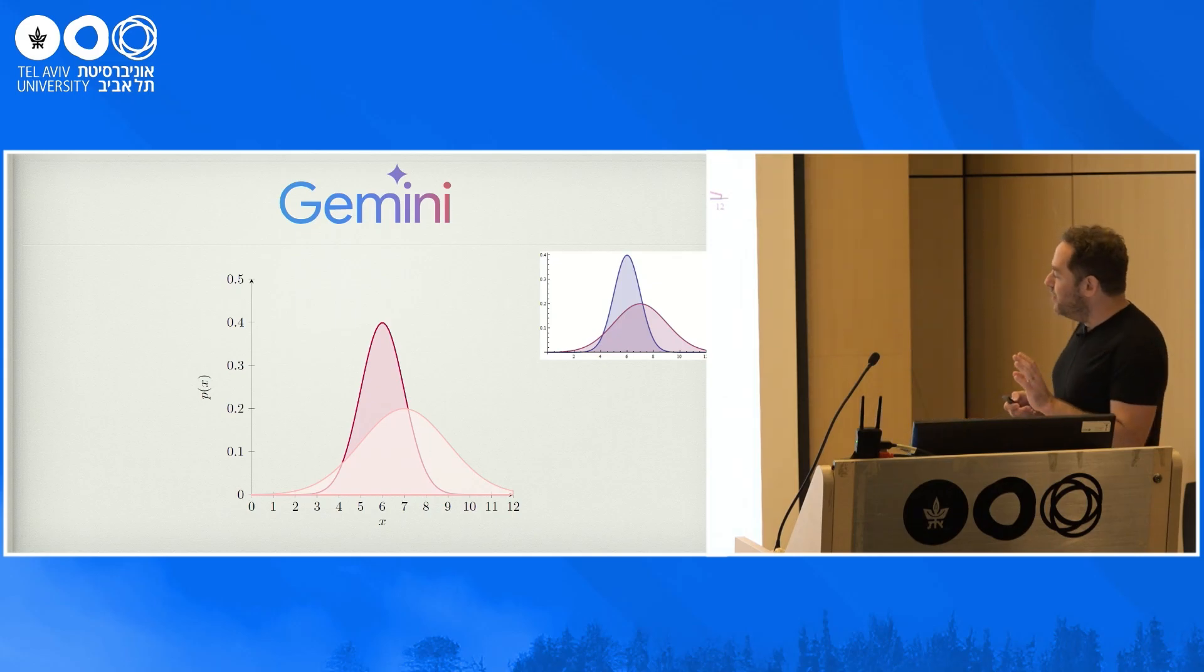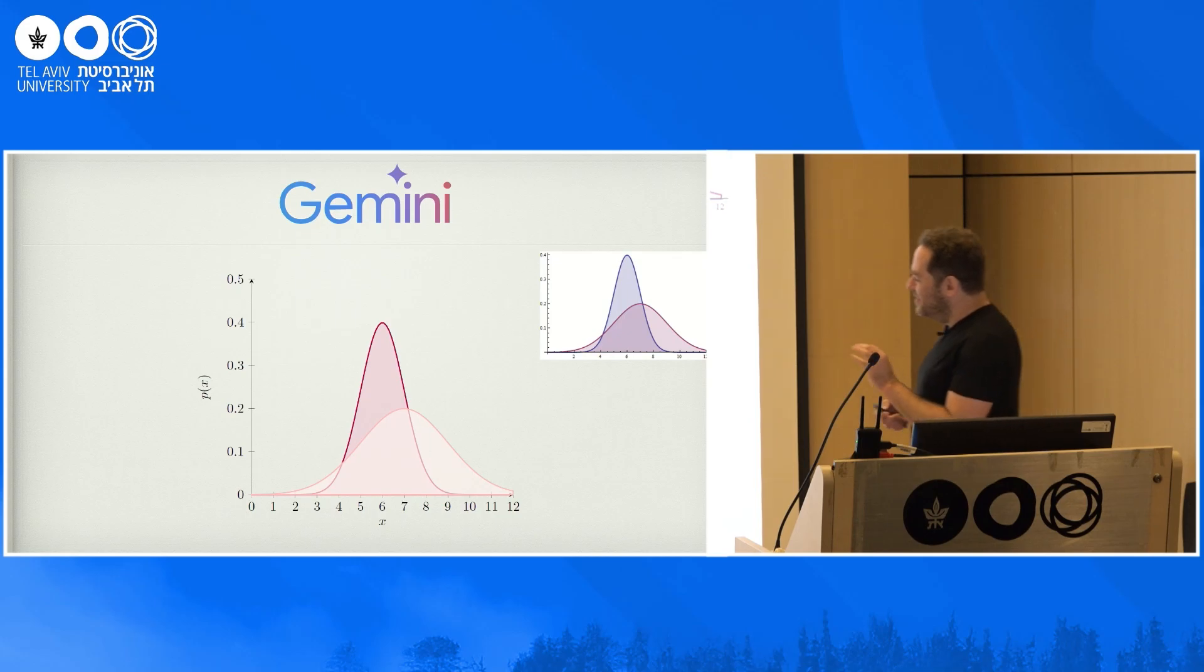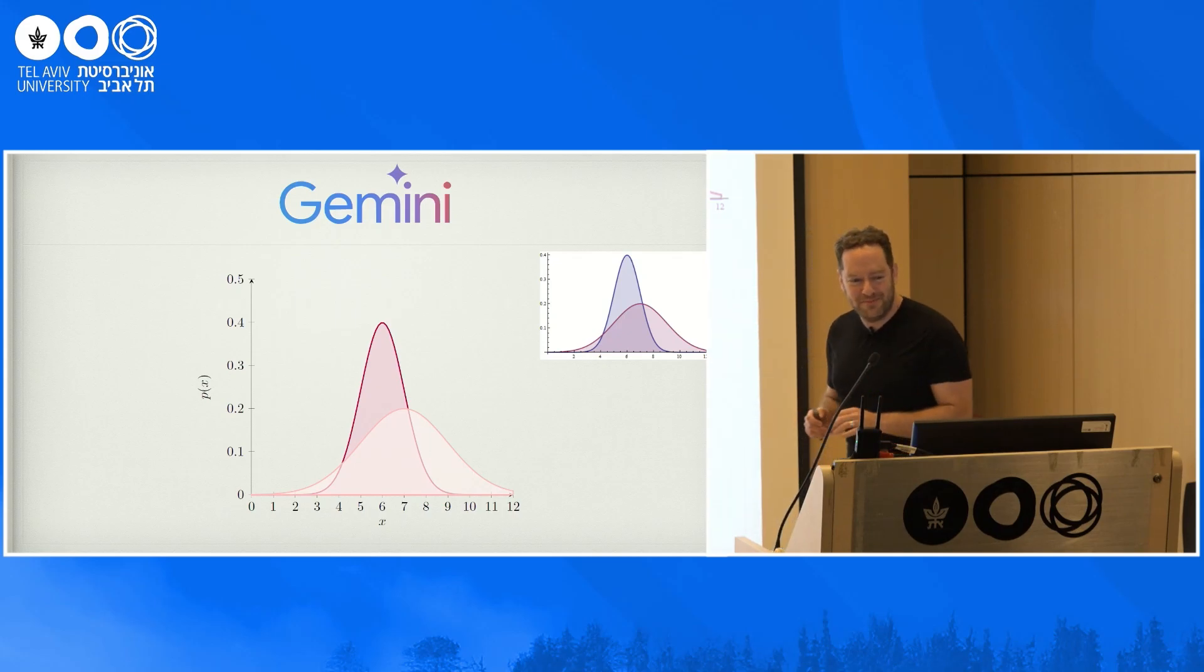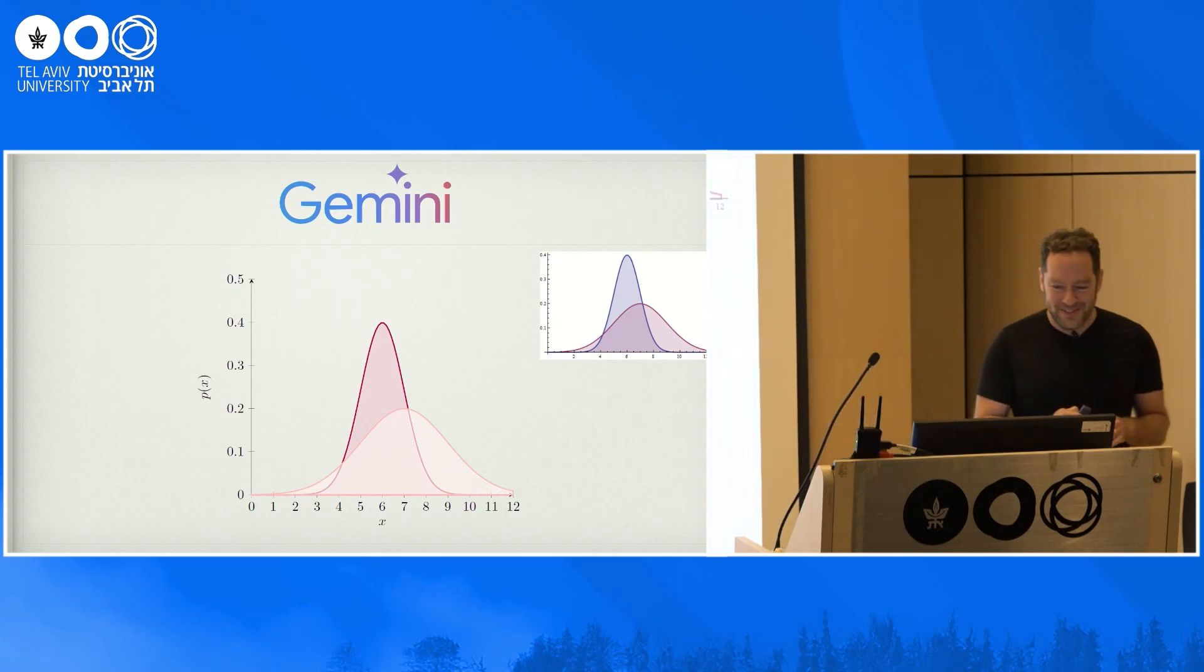And Claude also gets the same result. Gemini, I think, gets a slightly nicer result because it decides to shade the region in the middle between the Gaussians into some kind of a mix of the colors. So really top scores for Gemini.